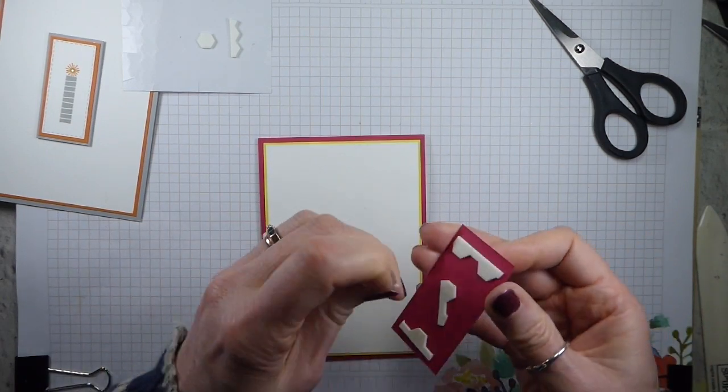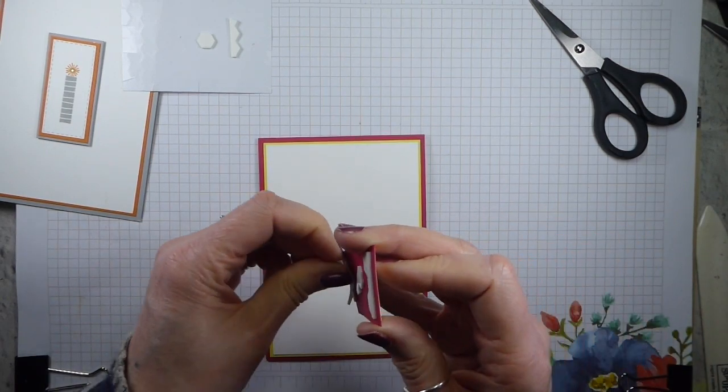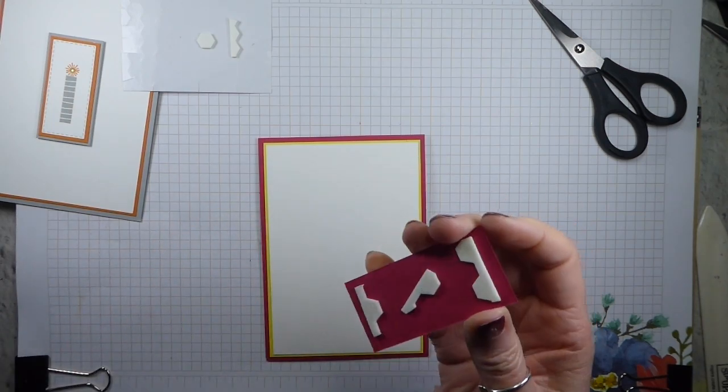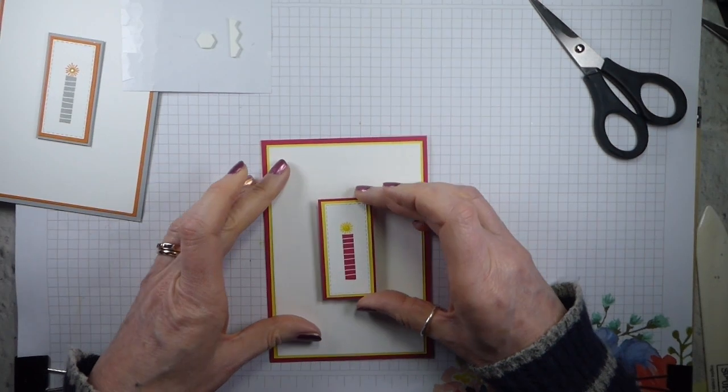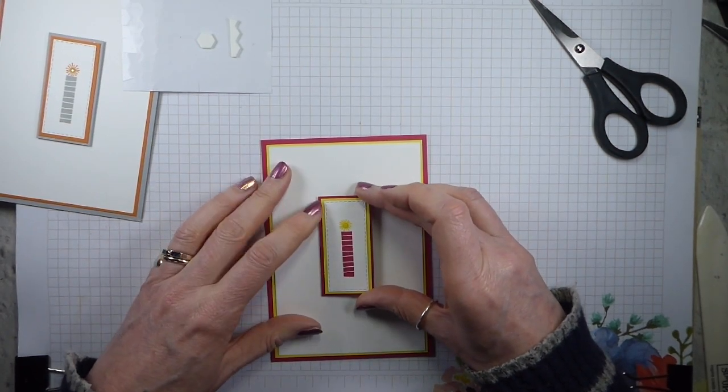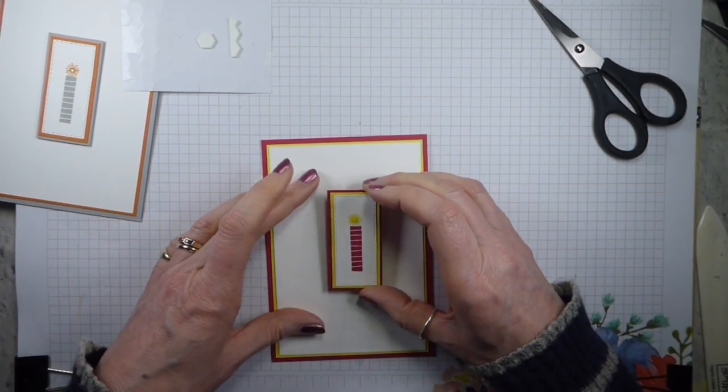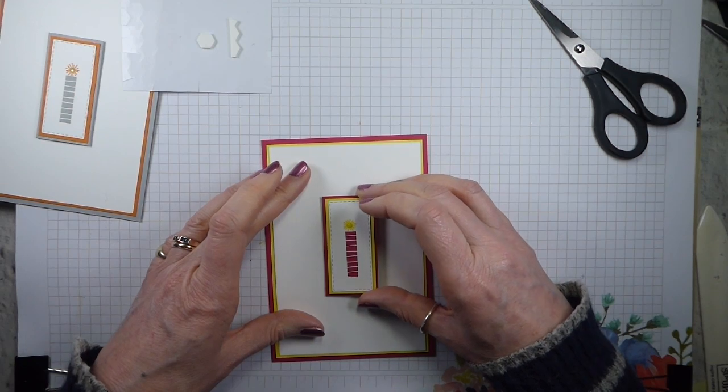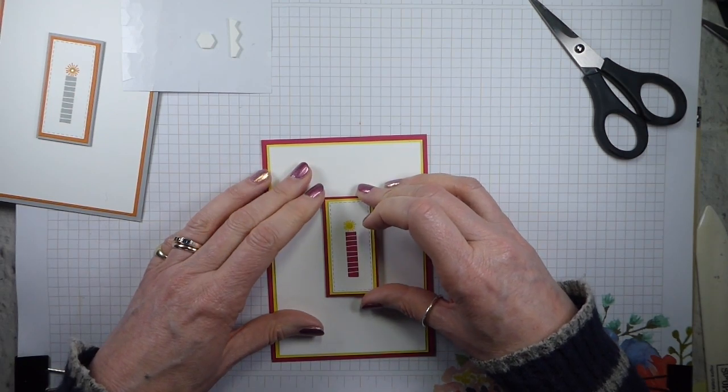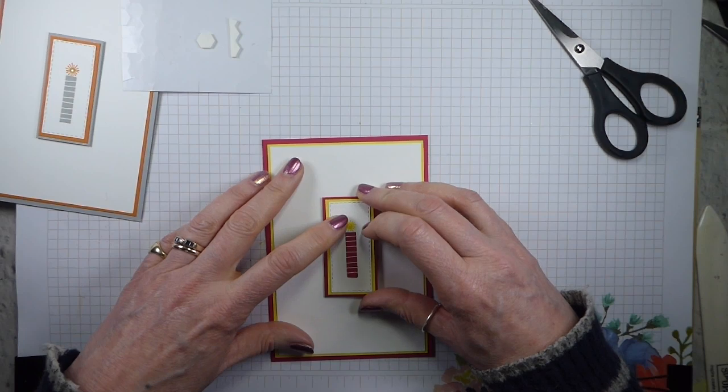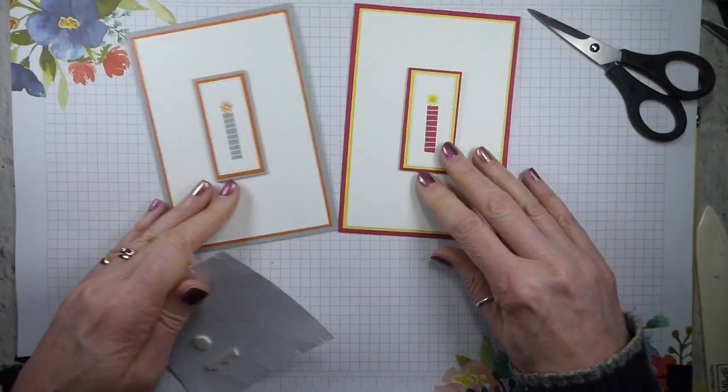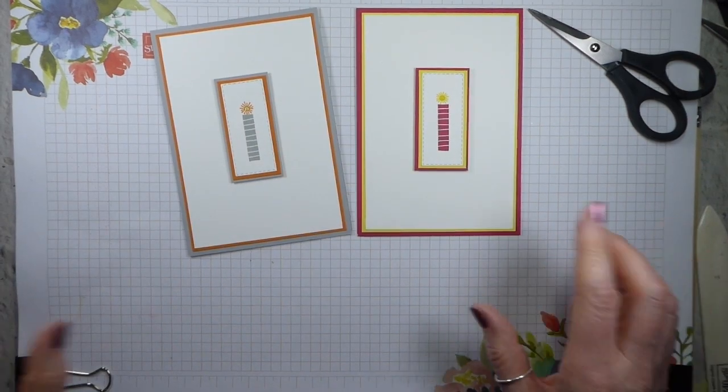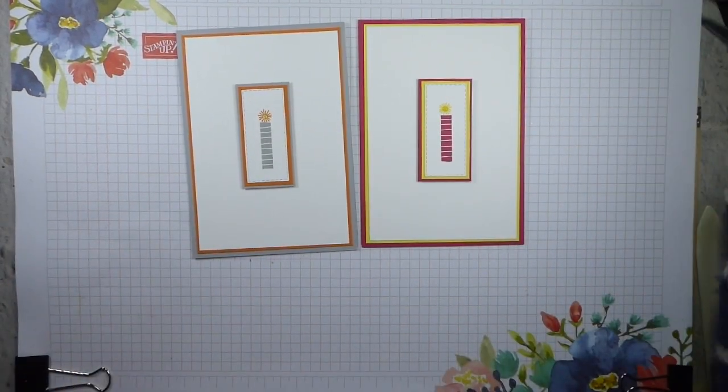Just pop this on and then we are done in just about 11 or 12 minutes. Now, obviously, you could change these colours so that they are the green and blue, or maybe the lovely lipstick and the grapefruit grove. Change the colours and you get a completely different look.